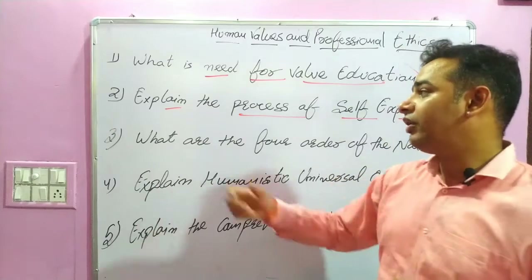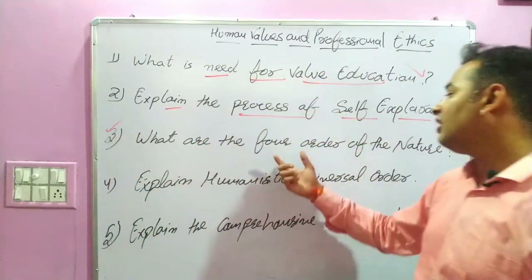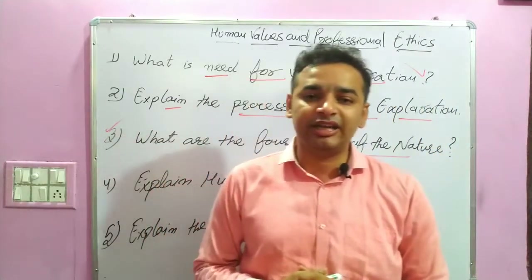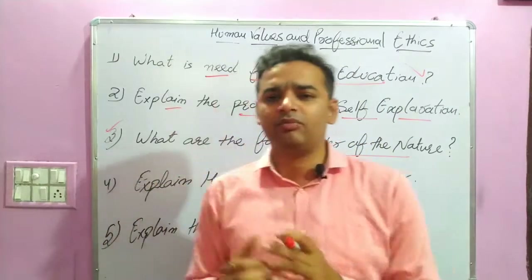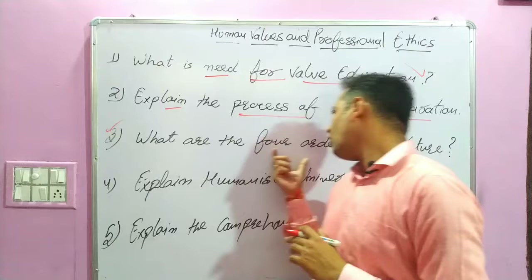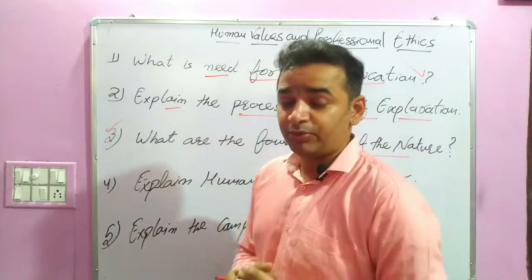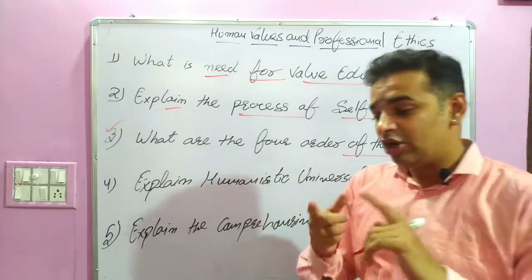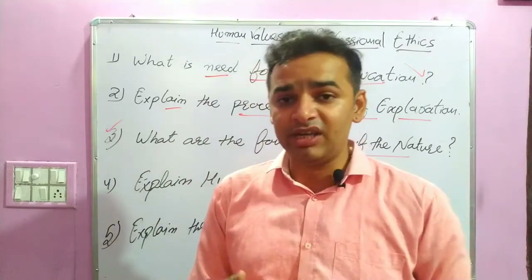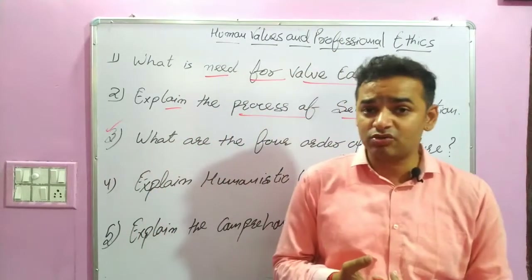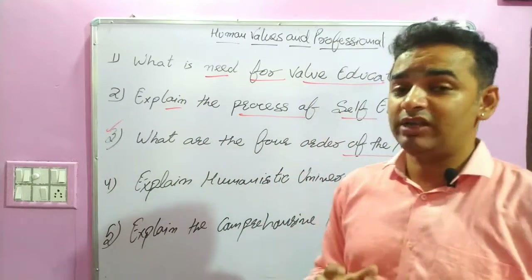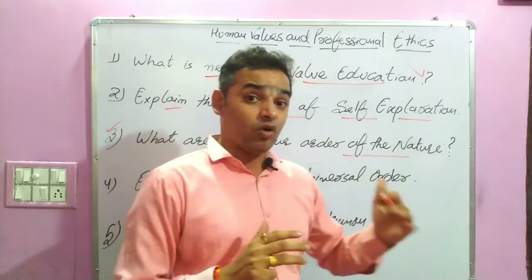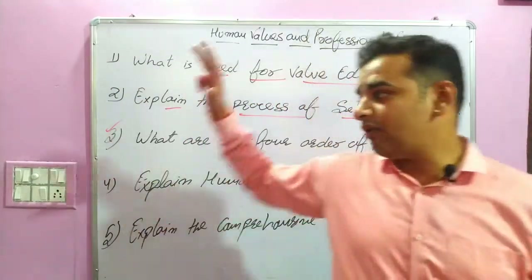The third question is: What are the four orders of nature — such as the pranic order and the material order? These are again one of the most important questions. No matter if you are a B.Pharma, B.Sc., B.Tech, or B.A. student, these questions are always covered. The probability of all five questions appearing in your exam is more than 90 percent.